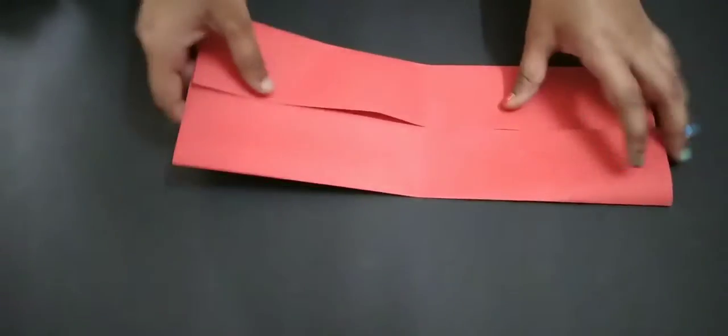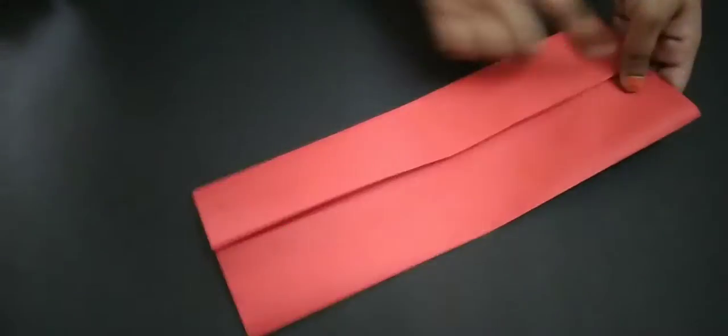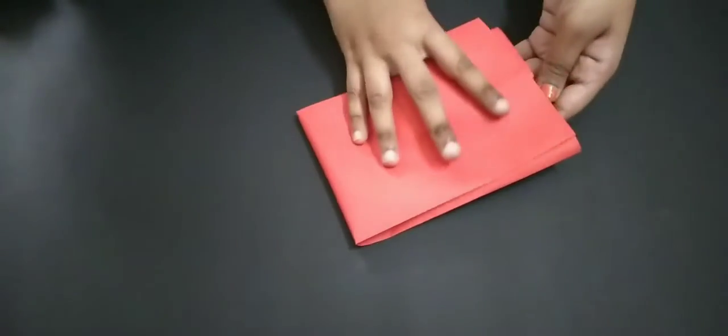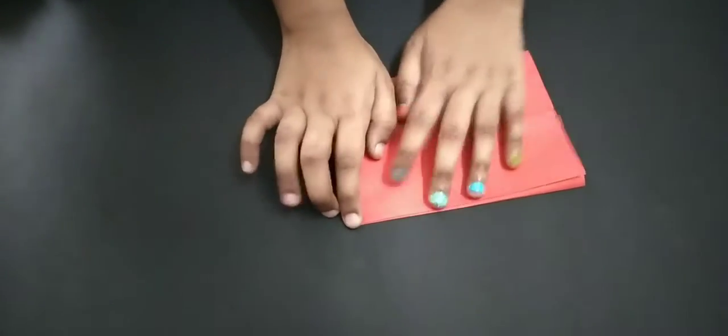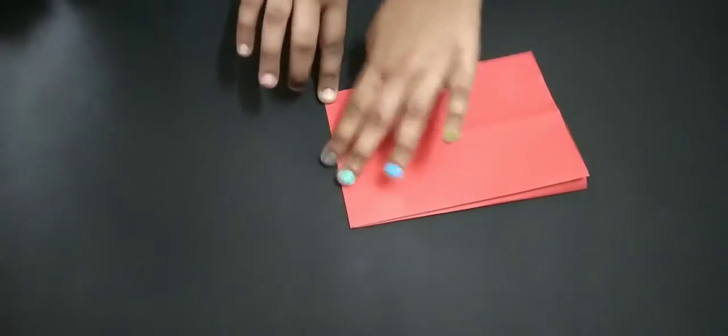So this is how it looks. Now you have to fold the paper in half like this and make the paper firm. Okay, so this is how it looks. Now open the paper.